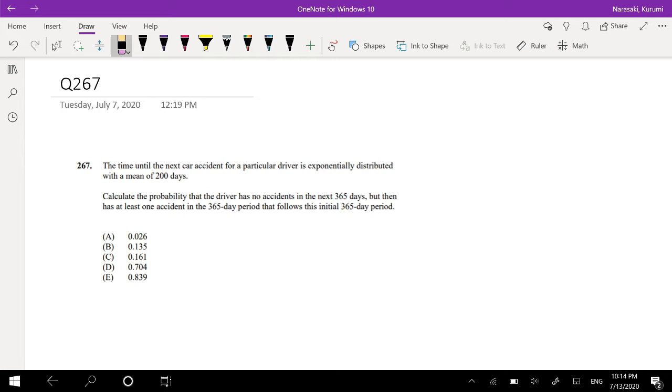Assuming you already attempted it, let's just dive right in. The time until the next car accident for a particular driver is exponentially distributed with a mean of 200 days. Calculate the probability that the driver has no accident in the next 365 days. So from today to 365, there is zero accident, and from 365 to 730, there is at least one accident.